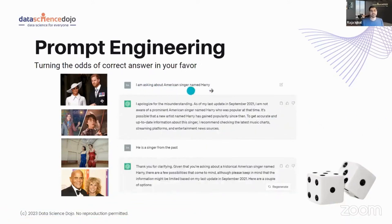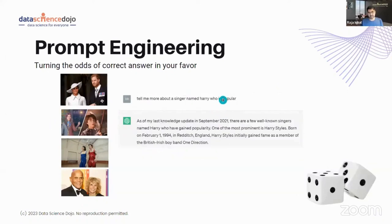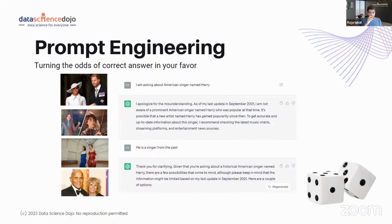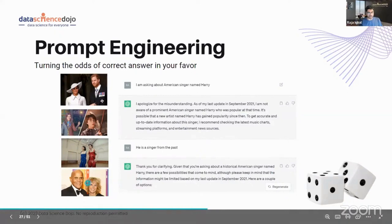I then said 'No, I'm asking about the American singer named Harry,' and ChatGPT got confused. I thought maybe it was confused by the present tense, so I added 'He's a singer from the past.' ChatGPT replied: 'Thanks for clarifying — you're asking about a historical American singer named Harry,' and gave me two options, but the answer was still somewhat ambiguous.